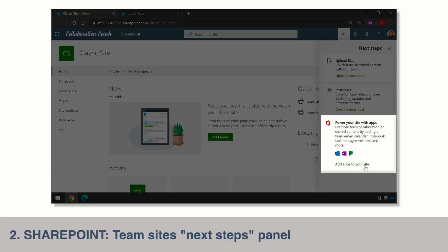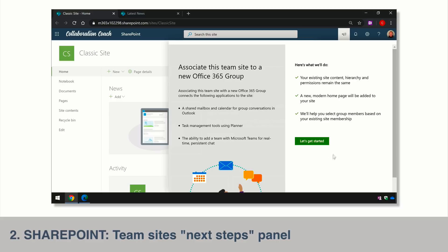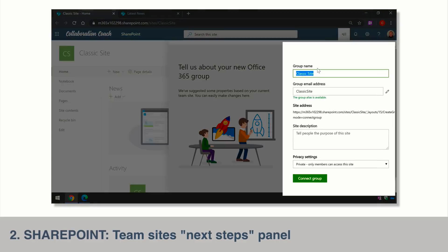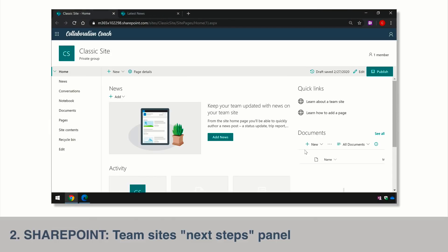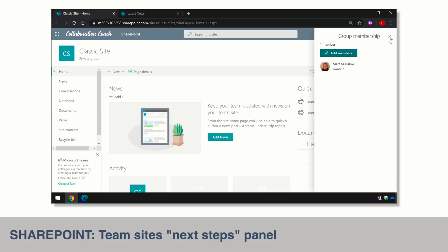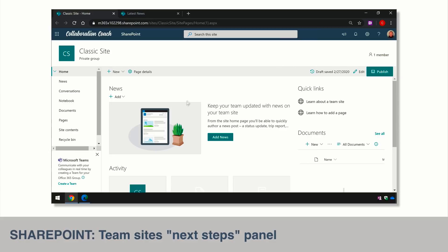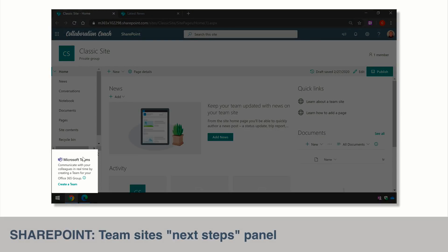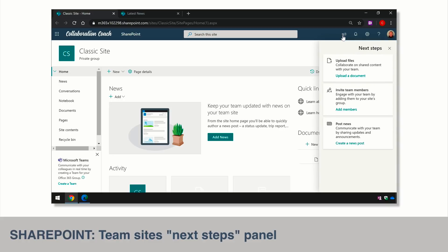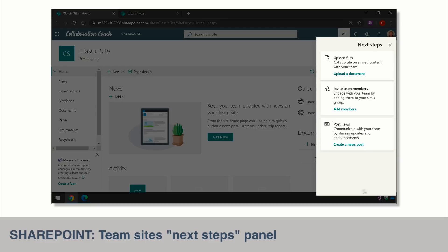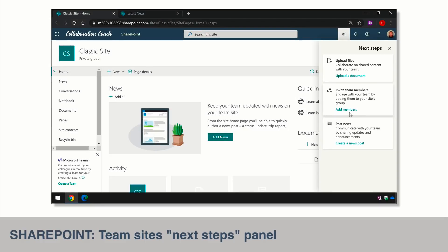When I hit the Next Steps button there's a button that gives you the ability to create a group — it says 'add apps to your site.' When I press it, it takes me through the process of creating a group: it asks for the group name, whether I want it private, and any additional owners and members. Once finished, this site is now a group-connected site with group membership and other features like Planner. Microsoft are going to be developing the Next Steps button further in the future — we'll keep an eye on that.